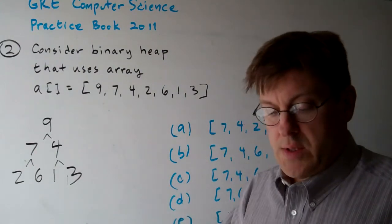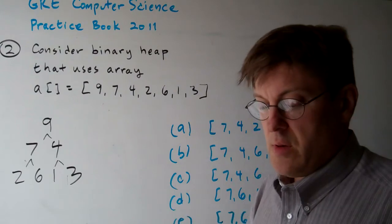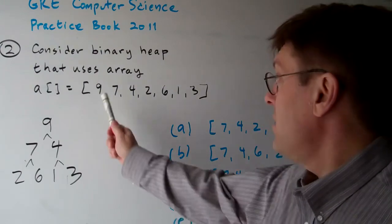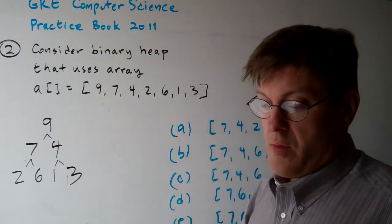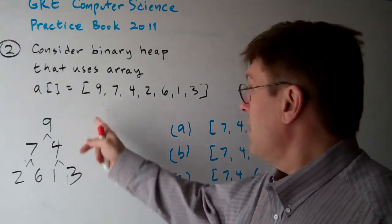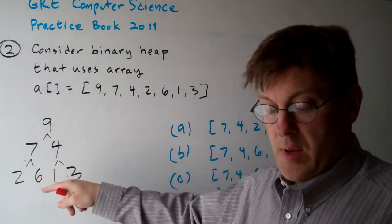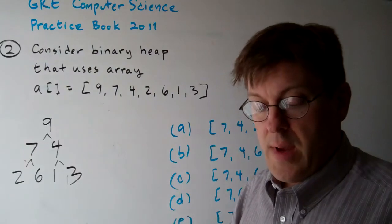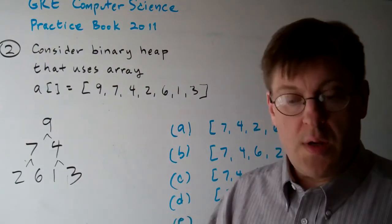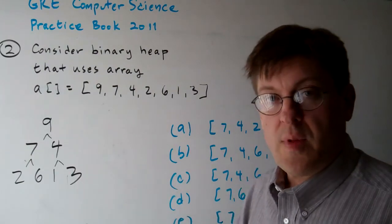Question number two. Consider the binary heap shown that uses an array [9, 7, 4, 2, 6, 1, 3] to store its elements. And this is the max heap here. What will be the values of the remaining elements in the array after one delete max operation from the heap?